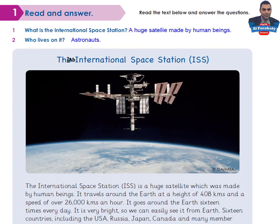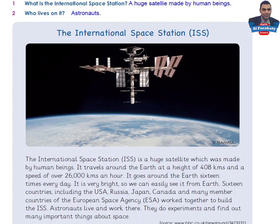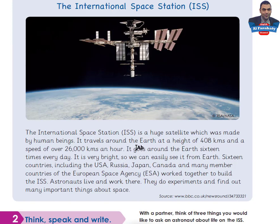Let me ask you more questions. Where does it travel? It travels around the Earth. How fast does it travel? At a speed of over 26,000 kilometers an hour. How high is it? It's 408 kilometers high. Can we see it from Earth? Yes, we can. What do the astronauts do on the ISS? They do experiments and find out many important things about space.